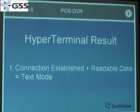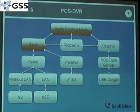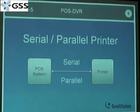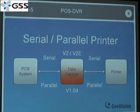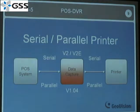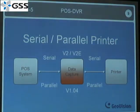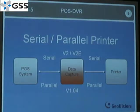Now we assume we have a text mode POST. The next step is to see what kind of printer port is used by your POST system. Some POST systems may have serial printers and some might have parallel printers, so you need to find out first. We have made different data capture boxes to support different POST systems, because the data capture box needs to intercept the information sent from the POST to the printer. If a POST system uses a serial printer, you can use data capture V2 or V2E. If you use a parallel printer, you'll need our data capture version 1.04.